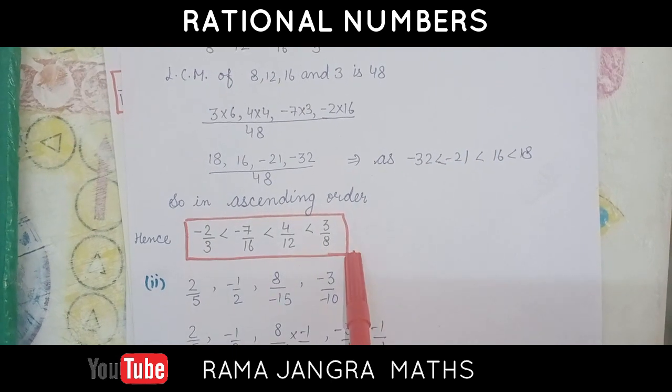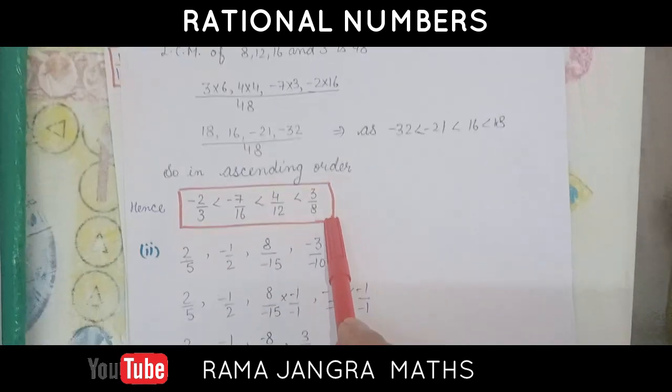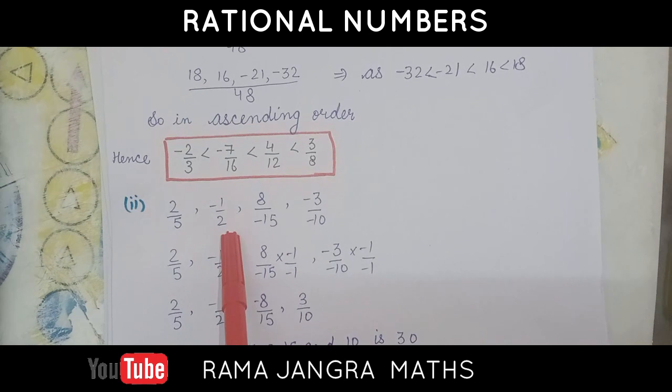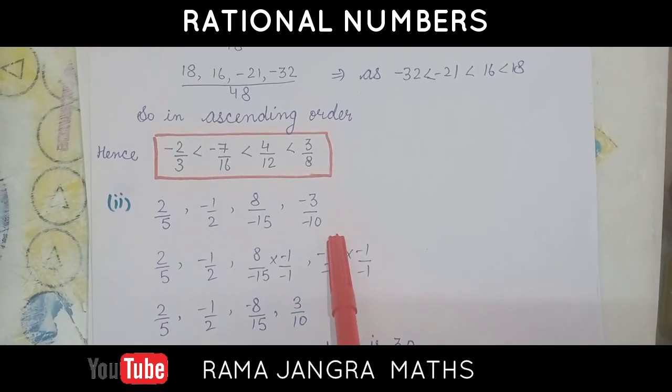So, these rational numbers are in ascending order. Similarly, we can do the second part. That is 2 by 5, minus 1 by 2, 8 by minus 15, and minus 3 by minus 10.